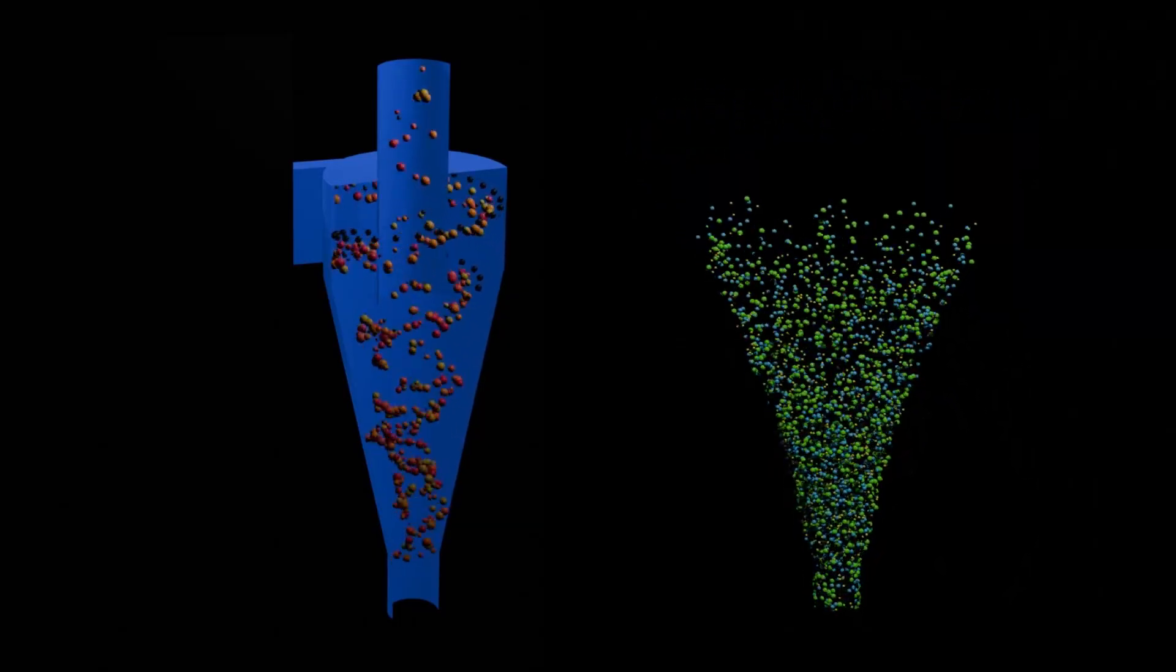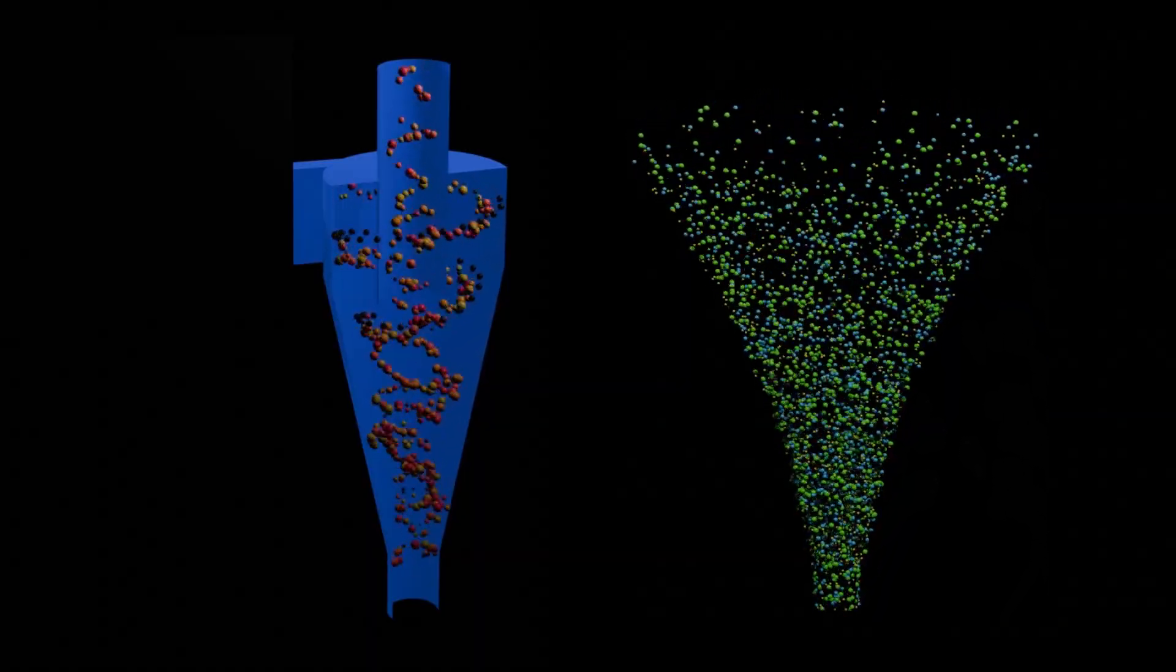Comparing a tornado with a cyclone separator, both form a vortex which is a whirling mass of air or fluid spinning up to 100 km per hour.